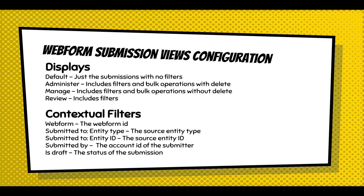There are five contextual filters. The web form filter requires passing in the web form ID to view its submissions — this is handled automatically. For a web form node, you need to pass the entity type (node) and the ID of the node. For user submissions, you need the account ID of the user. Finally, there is a flag for whether users are viewing their drafts or not.